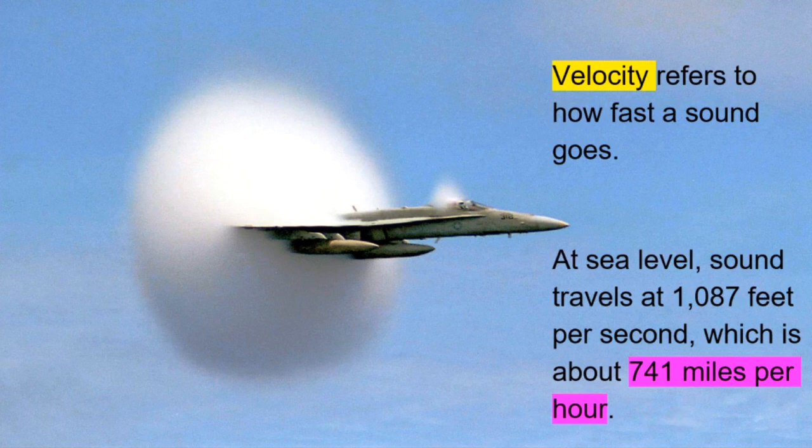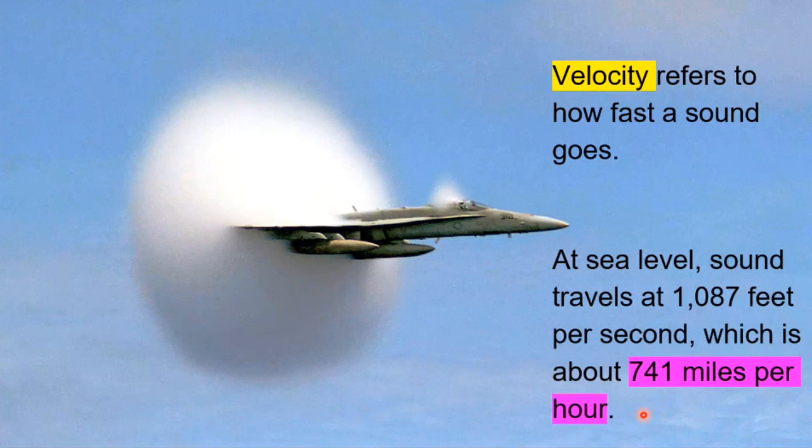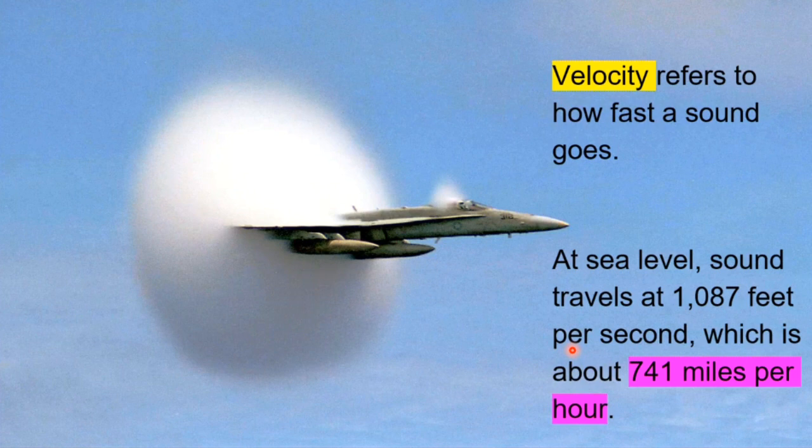The speed of light, which is 669,600,000 miles per hour, is quite a bit faster than the speed of sound. Now you may have experienced this. Have you ever been positioned far enough away from a marching band that you can see the drummers, you can see their stick strokes hitting the head of the drum, but then it's some delayed second later that you actually hear the drum? That is the reality of the somewhat slow speed of sound, especially compared to light.